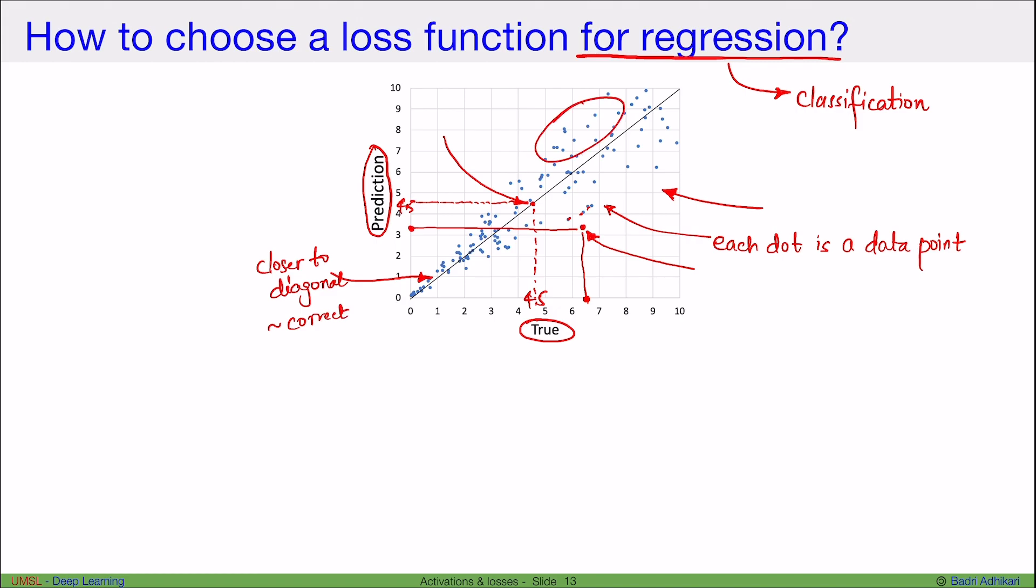And all those that are away from the diagonal are incorrect predictions. So this plot really helps to evaluate or assess how a regression model is doing. So we can even see for larger values, which is the region over here, how the predictions are doing.